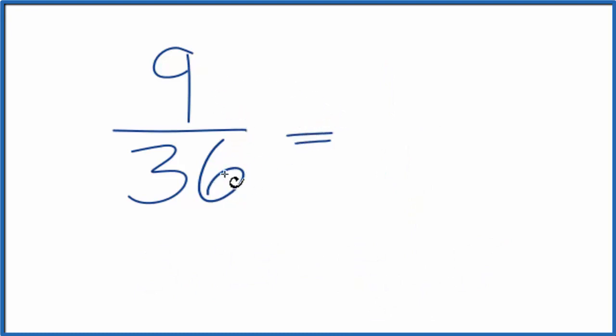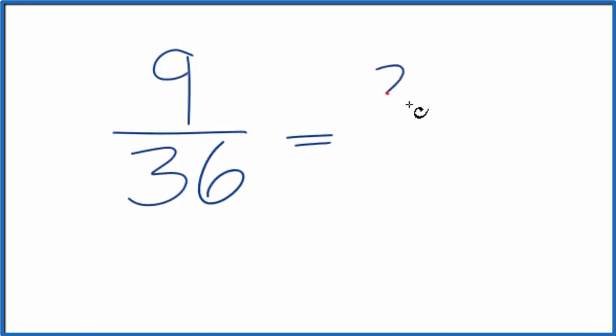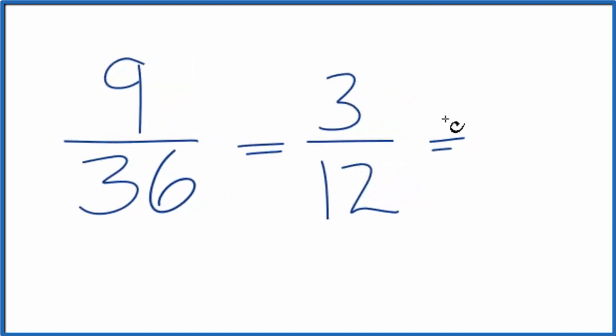If you didn't know that 9 times 4 was 36, maybe you would divide the numerator and denominator by 3. 9 divided by 3, that's 3. 36 divided by 3, 3 times 12 is 36. Then you might note that 3 goes into 3 and 12 evenly. 3 divided by 3 is 1. 12 divided by 3 is 4.